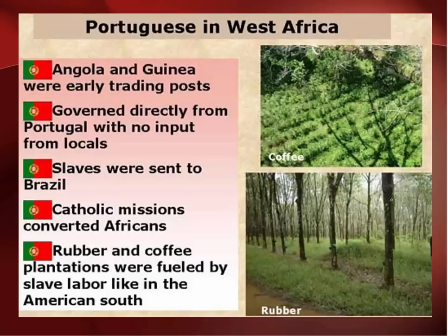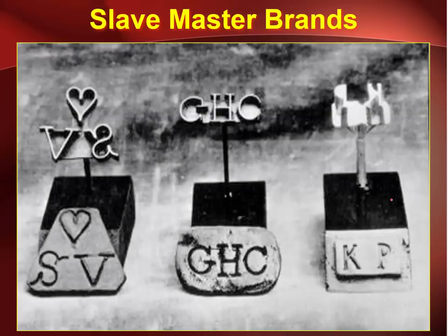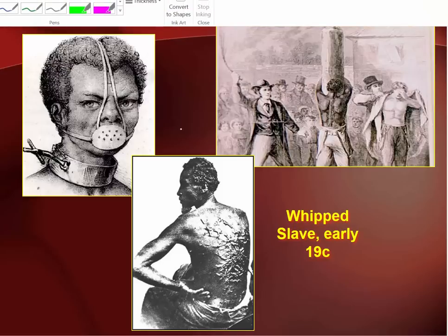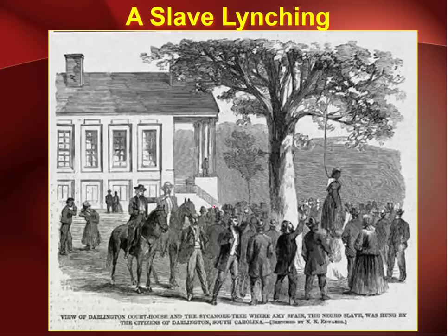Within Africa itself, there were rubber and coffee plantations which also utilized slave labor. Here we can see a notice of a slave auction in New York in the 17th century. Once slaves were bought by their masters, they would be branded permanently so that if they escaped, their owners would know where they belonged. This picture shows the whip marks on a man's back from being beaten over the course of years. And here you can see a depiction of a slave lynching — if any slave stepped out of line, quite commonly they would be hung in a very public manner as a message to the other slaves.